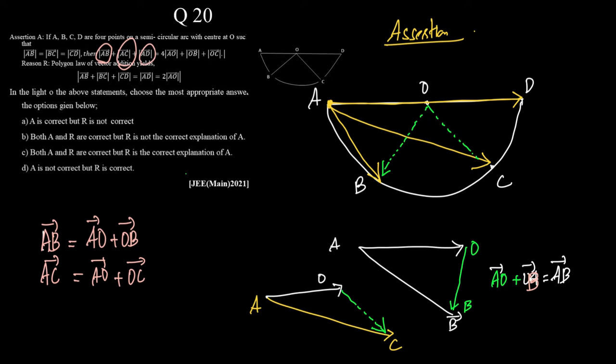What is the third term? The third term is vector AD. See, since this is a semicircle, we know that the radius would be same. So AO should be equal to OD, which means I can write here that this is equal to 2 times vector AO.